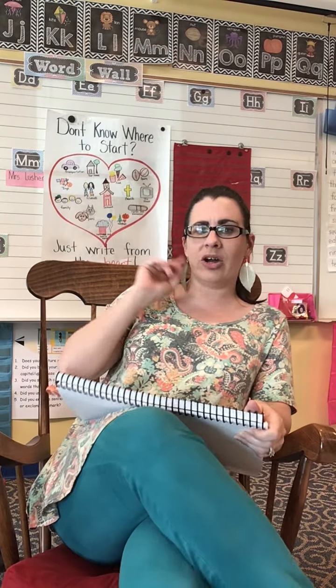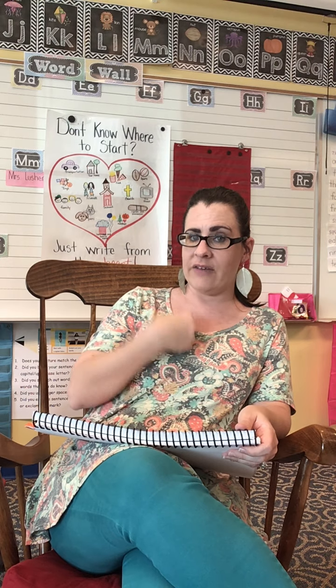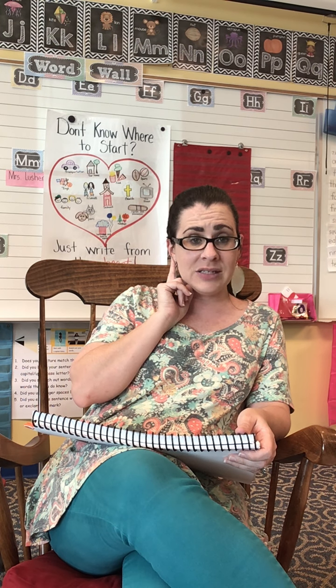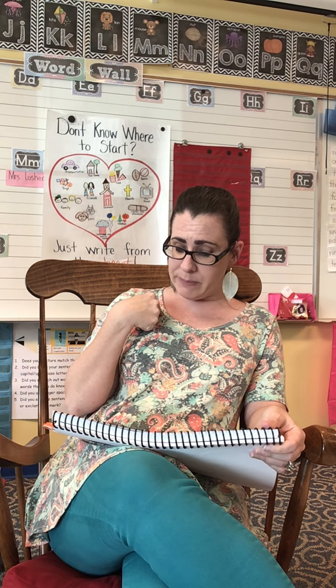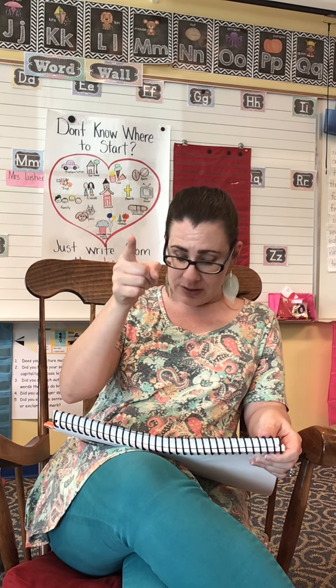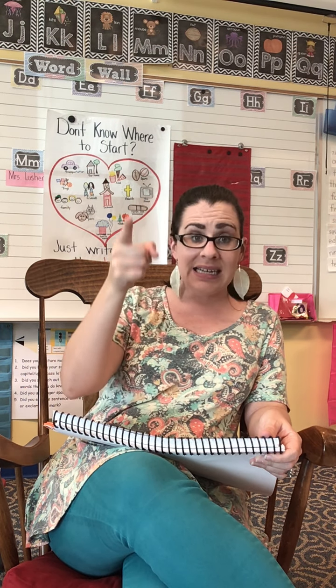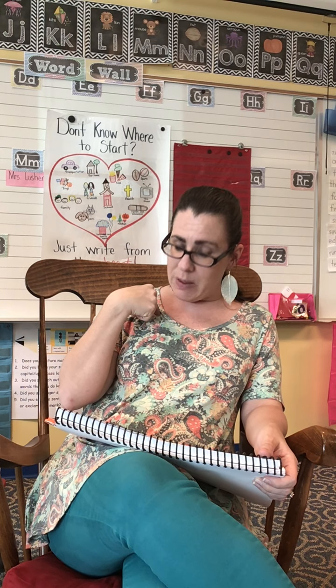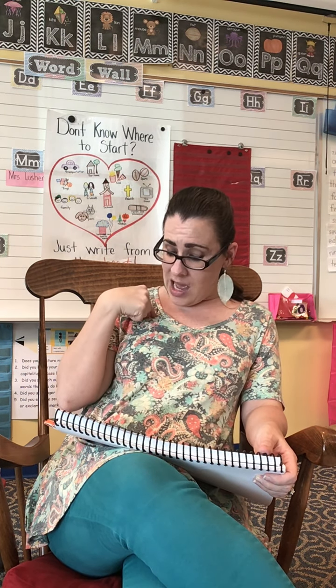All right, great job. We are going to do our poem. I want you to help me. I say it first, I point to you and it's your turn. I also want you to be listening this time for the words that rhyme in this nursery rhyme. Remember, words that rhyme have the same sound at the end. The itsy bitsy spider went. Up the water spout. Down came the rain and. Washed the spider out. Out came the sun and. Dried up all the rain. And the itsy bitsy spider. Went up the spout again.